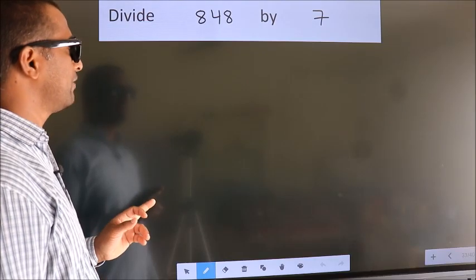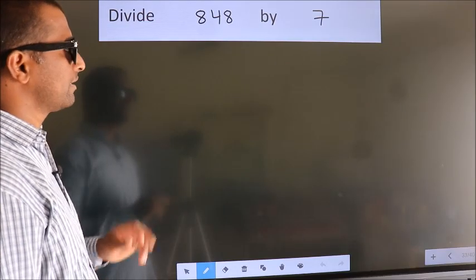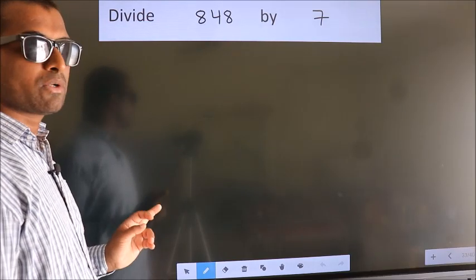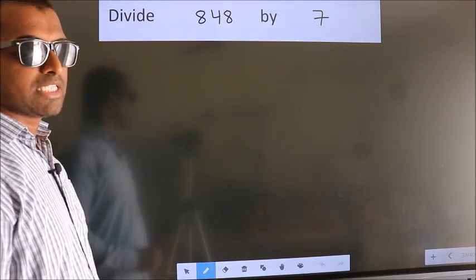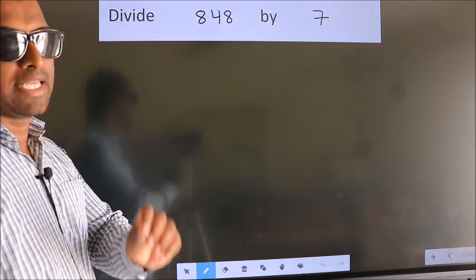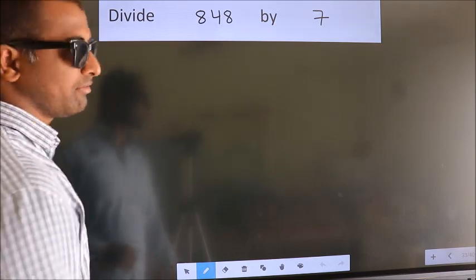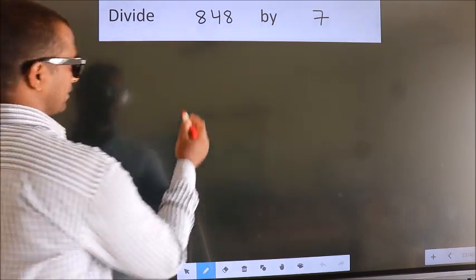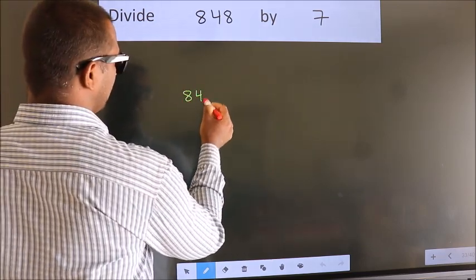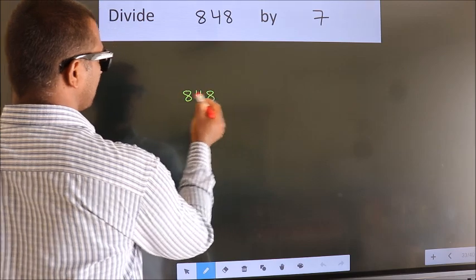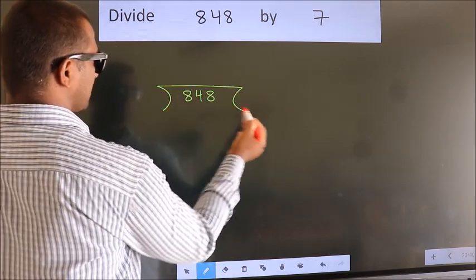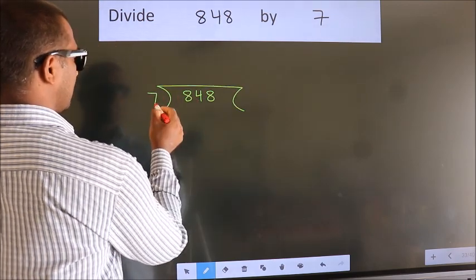Divide 848 by 7. To do this division, we should frame it in this way: 848 here, 7 here.